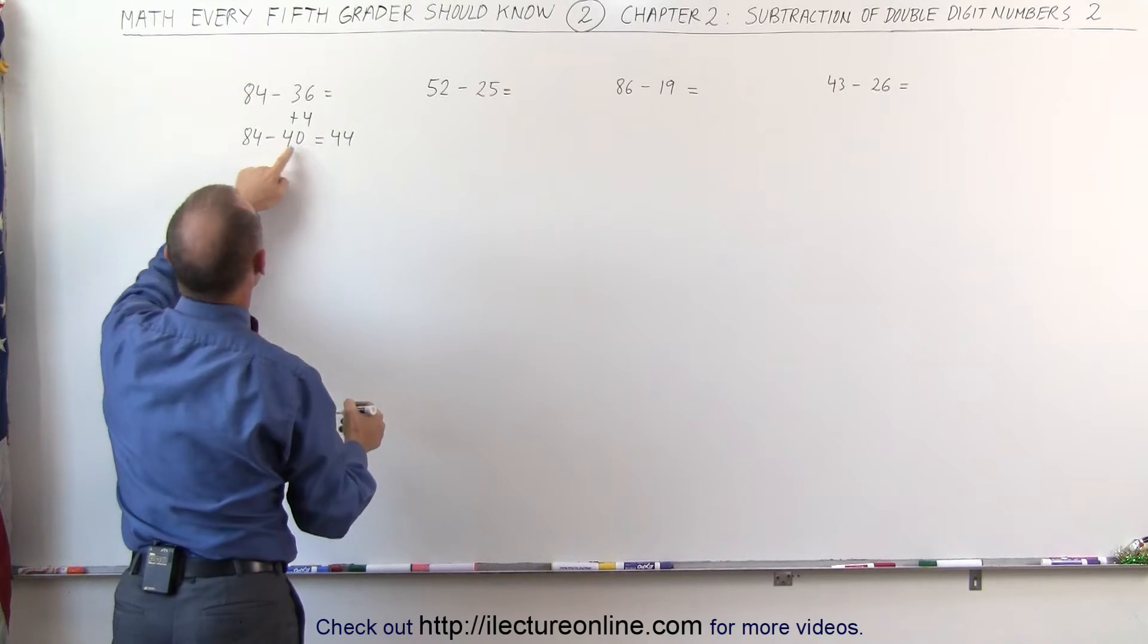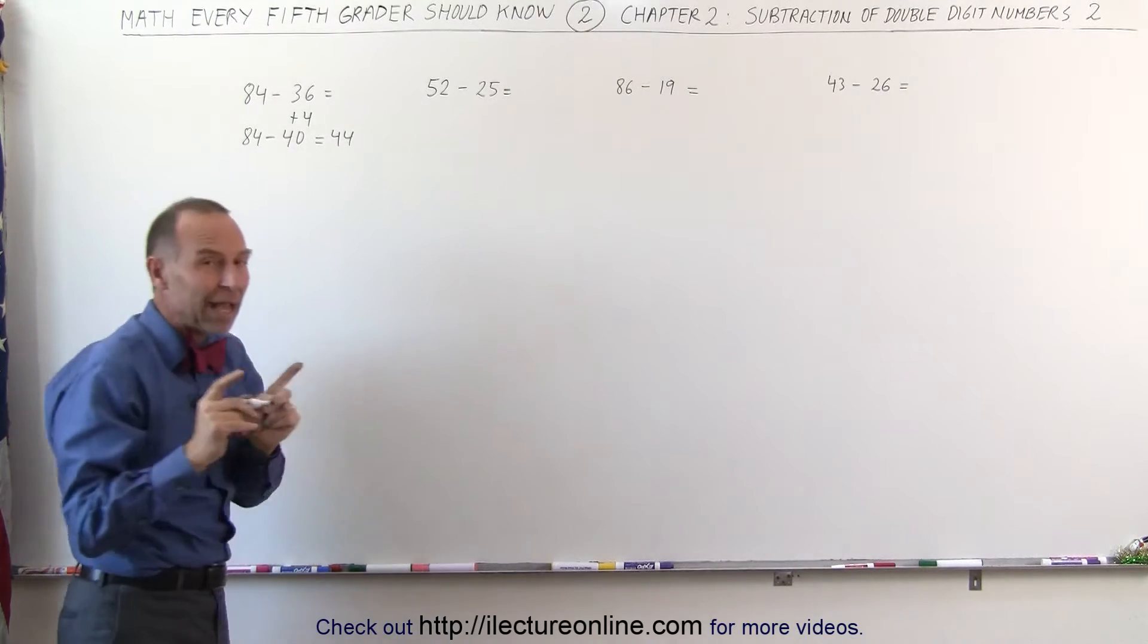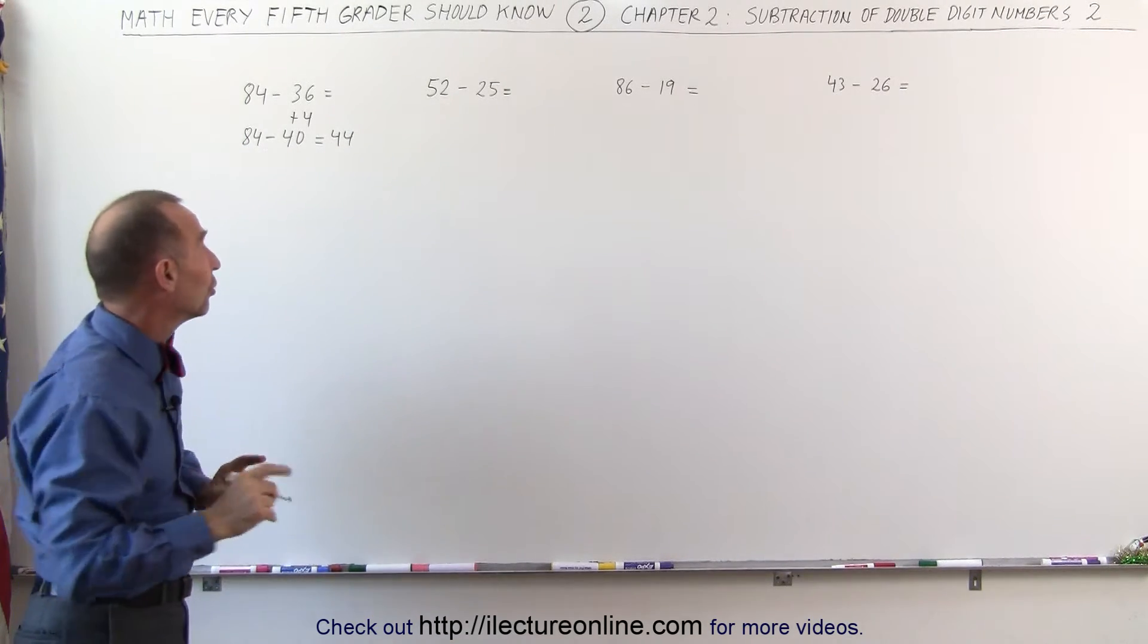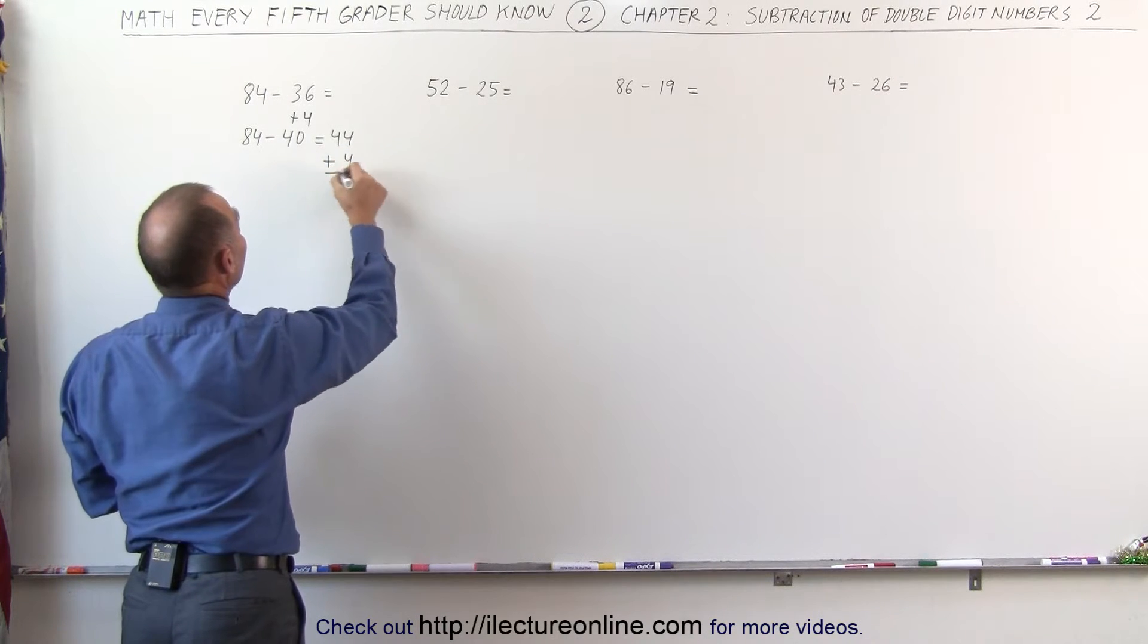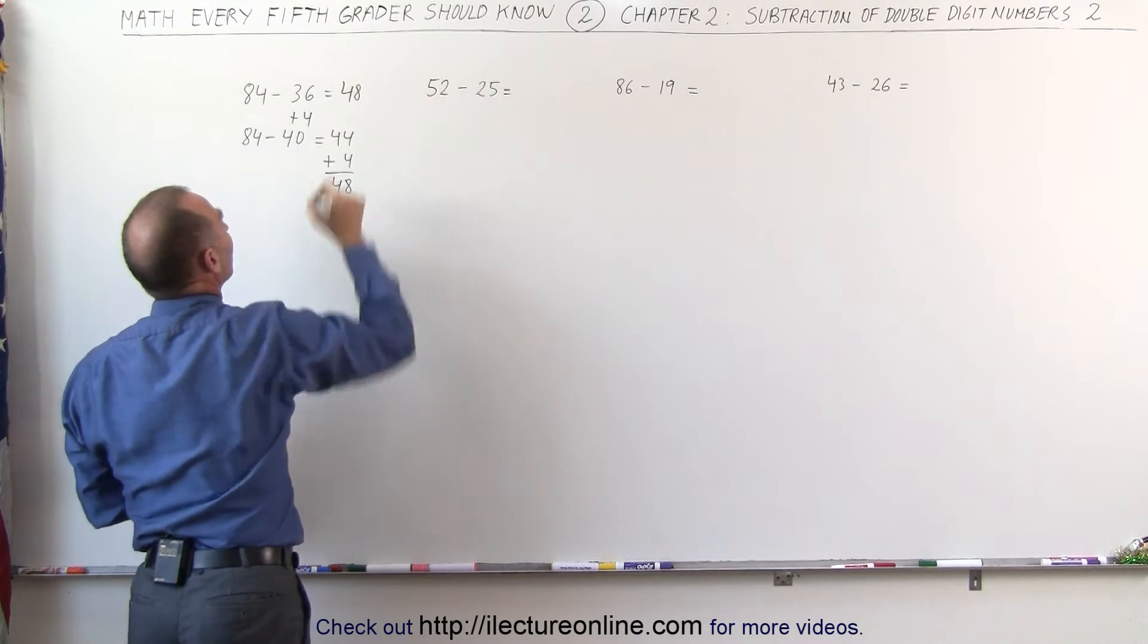8 minus 4 is 4, 4 minus 0 is 4. But remember, I subtracted 4 more than I should. Then I have to add that again to the final answer. 4 plus that gives me 48, and that's the answer to the subtraction.